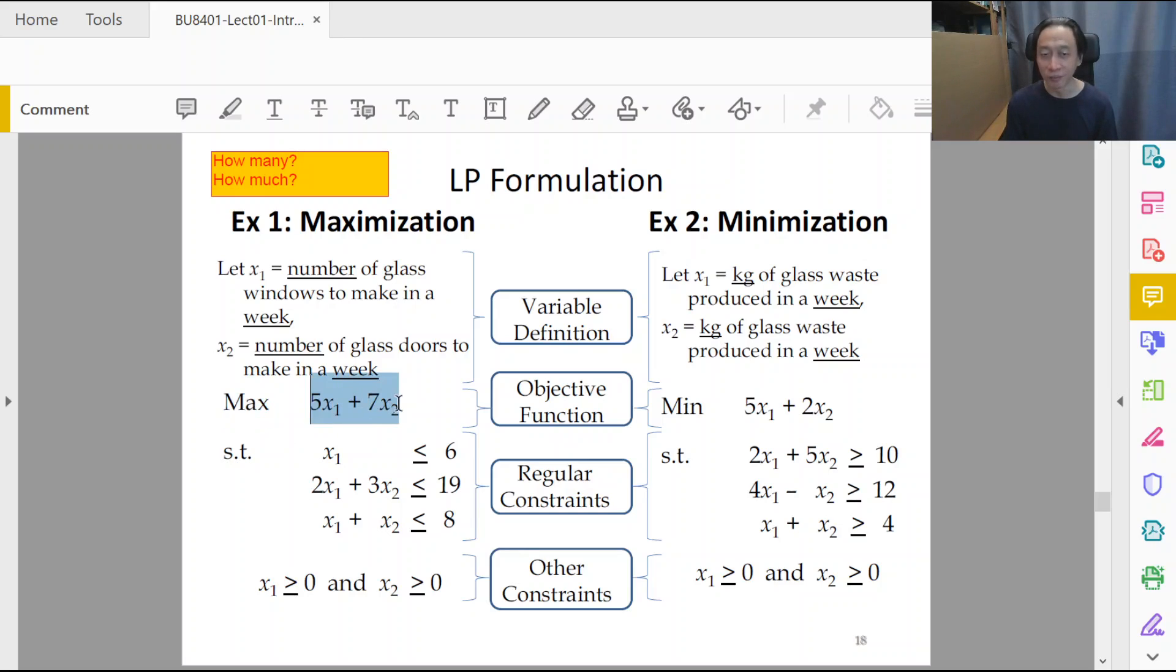Objective function has two parts: maximize or minimize the objective function. Finally, we have the all-important variable definition. Save the best for last. We have to declare variable definition first, and these are called decision variables.